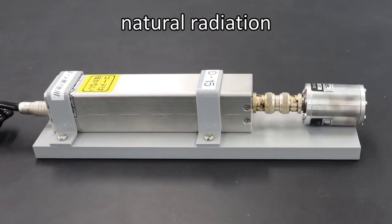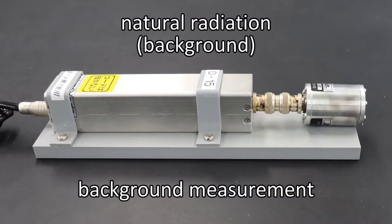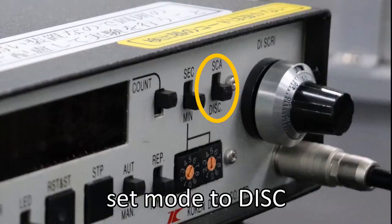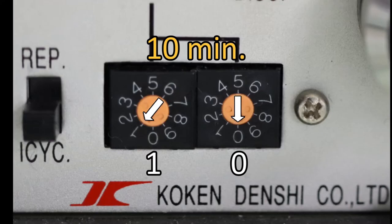The next experiment is to measure the absorption coefficient. There is also natural radiation, and it is called background radiation. First, we will measure the background count rate. Do not place any source or shielding plate in front of the detector. Change the mode back to disk mode. Set the measurement time to 10 minutes.